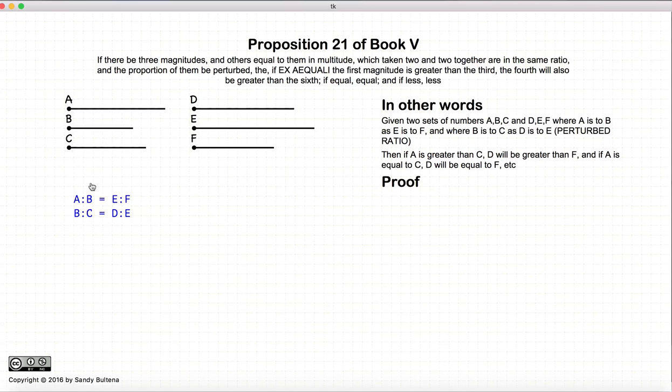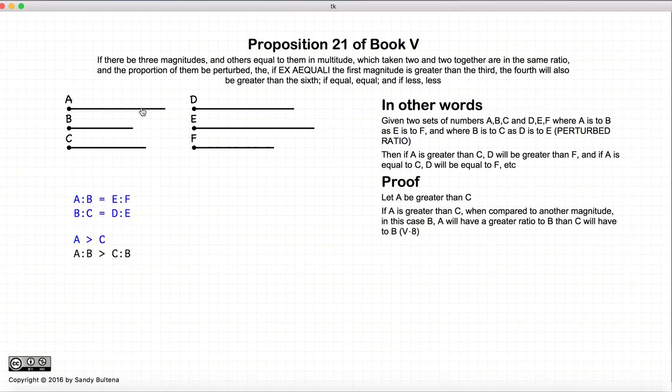So let's start. Here are our initial conditions. Again, these two proportions are equal, and these two proportions are equal. So let's assume that A is larger than C. A to B would be greater than C to B, according to proposition 8.